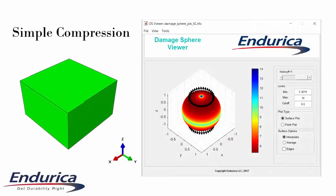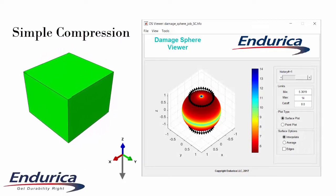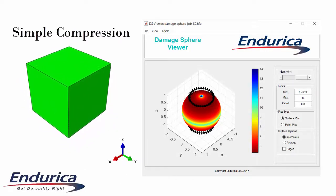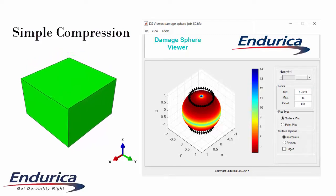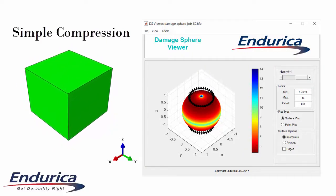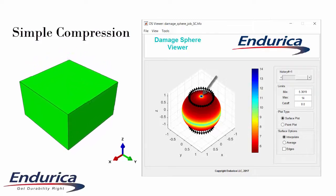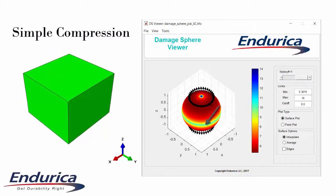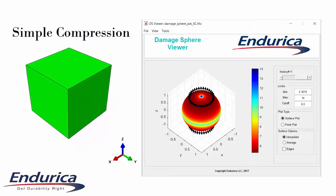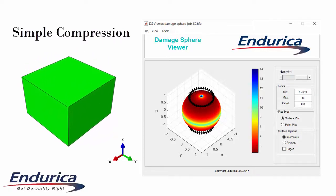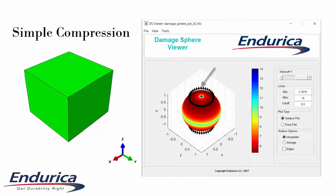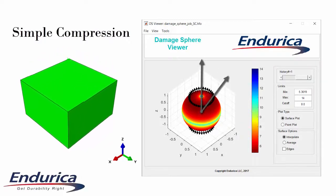Now let's look at simple compression. The unit cube is compressed in the z direction; again, the x and y directions are free. In simple compression, no matter what orientation you pick, no crack experiences mode 1 opening. Instead, crack closure occurs on the crack with normal in the z direction, and no load occurs on any crack with a normal perpendicular to the z direction. Cracks can grow in shear, however. Critical plane analysis identifies all planes on which the shearing is maximized. These planes all make the same angle with the z axis, roughly 45 degrees.